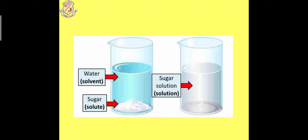Here is a diagrammatic representation. When we combine water, which is a solvent, and sugar as a solute, then we get a solution of sugar. We can also take the example of water and lime juice, water and soda, or water and sugar.